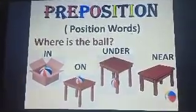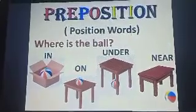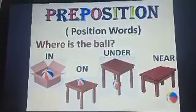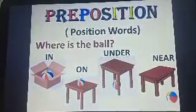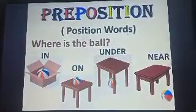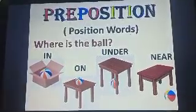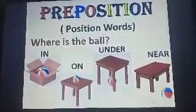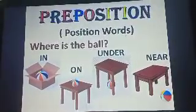Children, how are we able to identify the position of the ball — where is the ball? By seeing the position. Then we are able to identify: the ball is inside a box, the ball is on the table, the ball is under the table, and the ball is near to the table. These words — in, on, under, near — these words are prepositions.